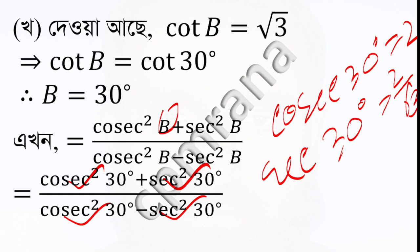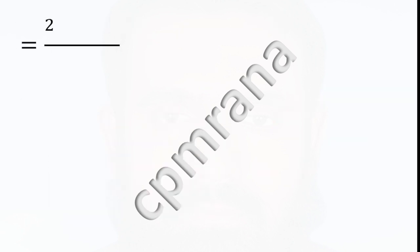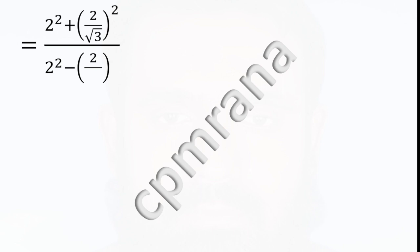2 by root 3 whole square. Now we have 2 square plus 2 by root 3 whole square, and 2 square minus 2 by root 3 whole square. So 2 square is 4, and 2a root square is 4, and root 3 root square is 3.